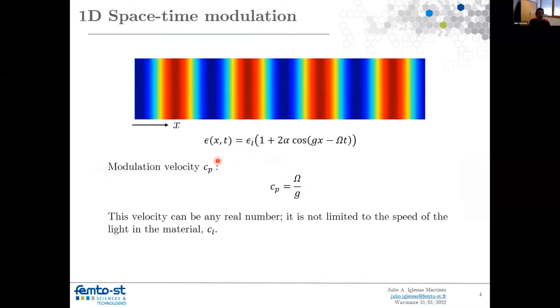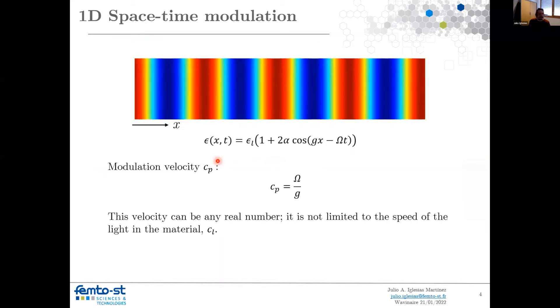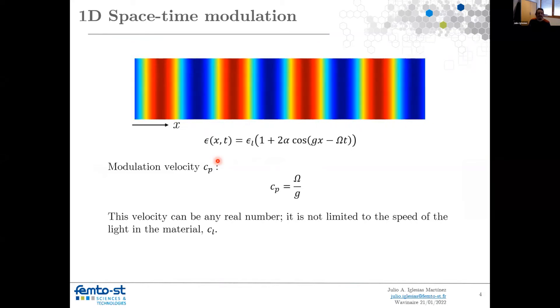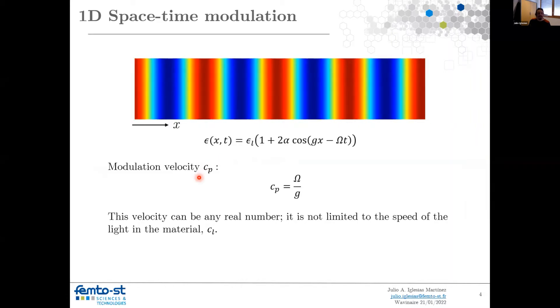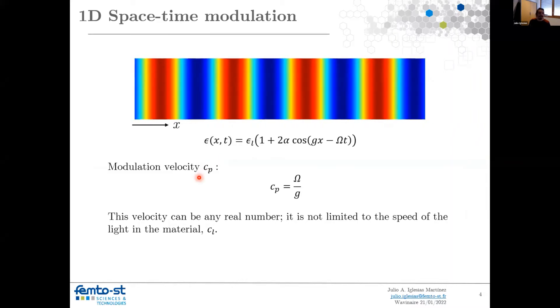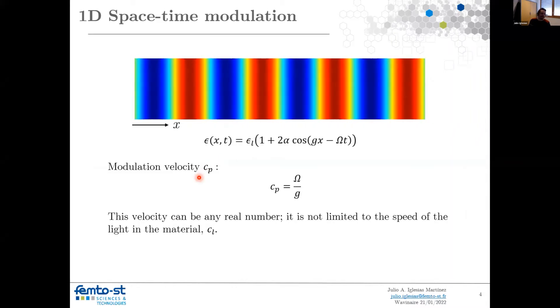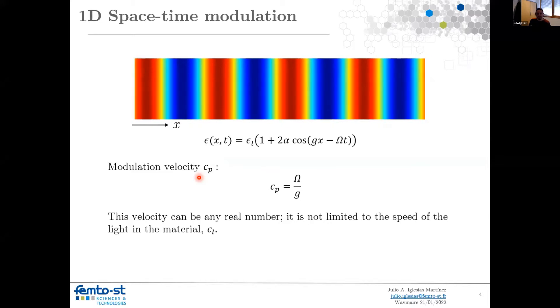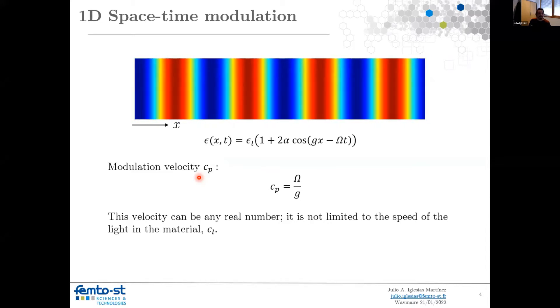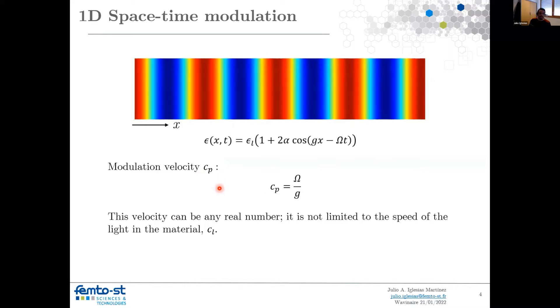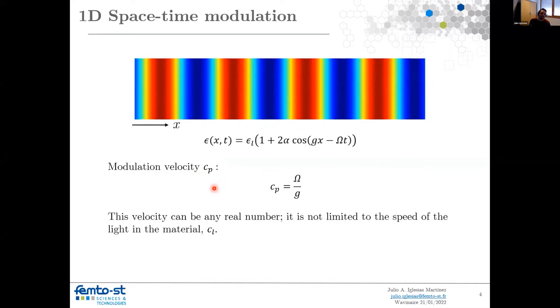with g, which is the wave vector of the modulation. Also, for all this kind of modulation, we are not moving any kind of matter, meaning that this is a type of phase velocity, and it's not limited to the speed of the wave in the media. So CP can be any number from zero to infinity.